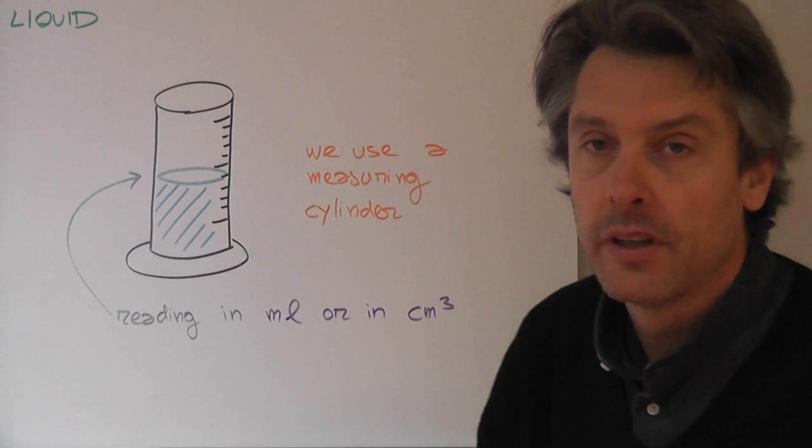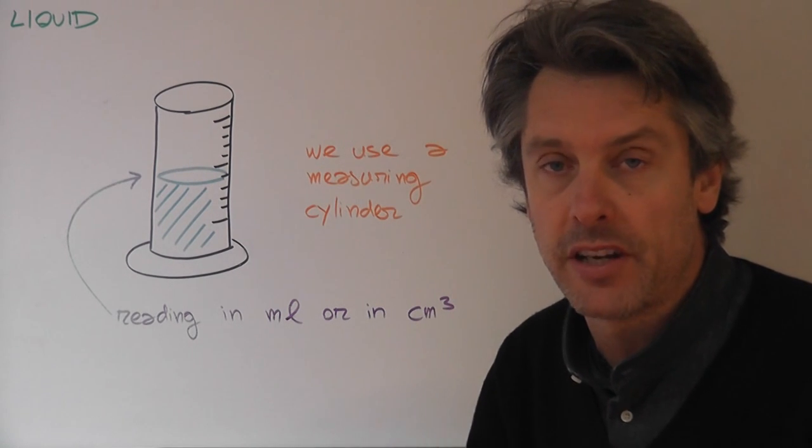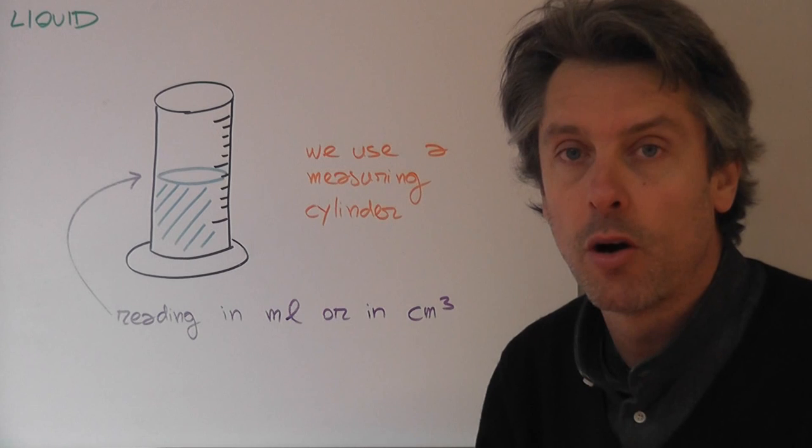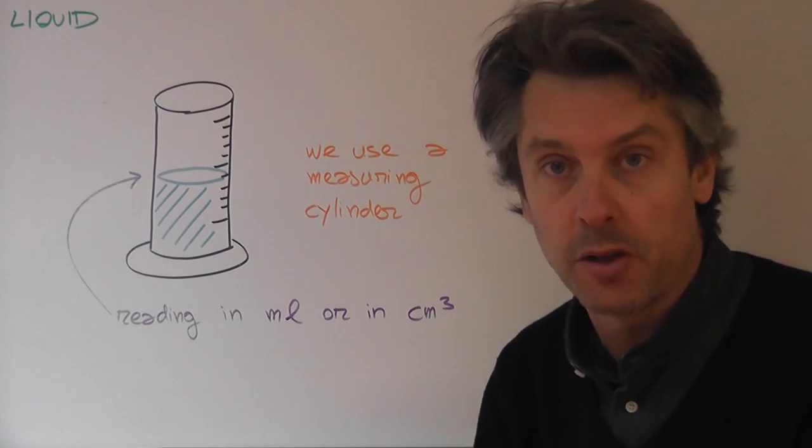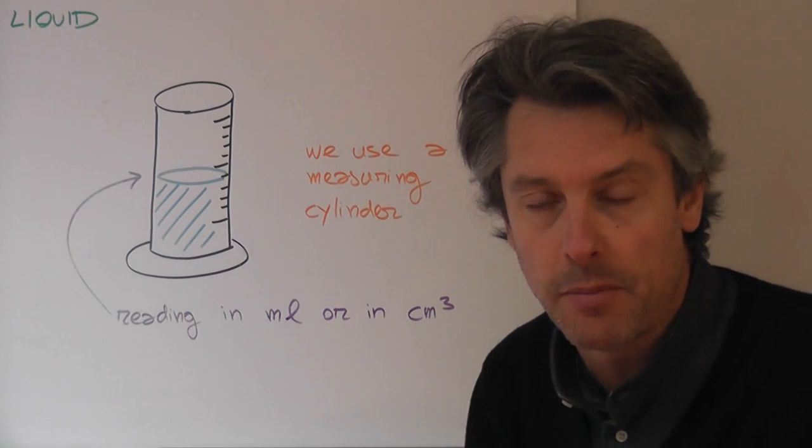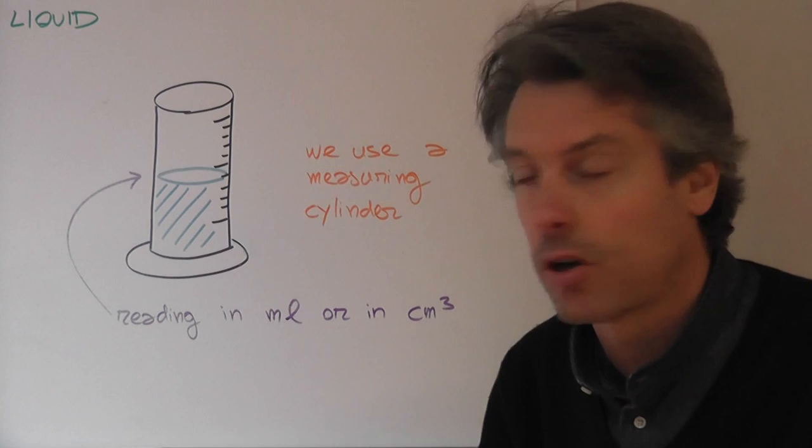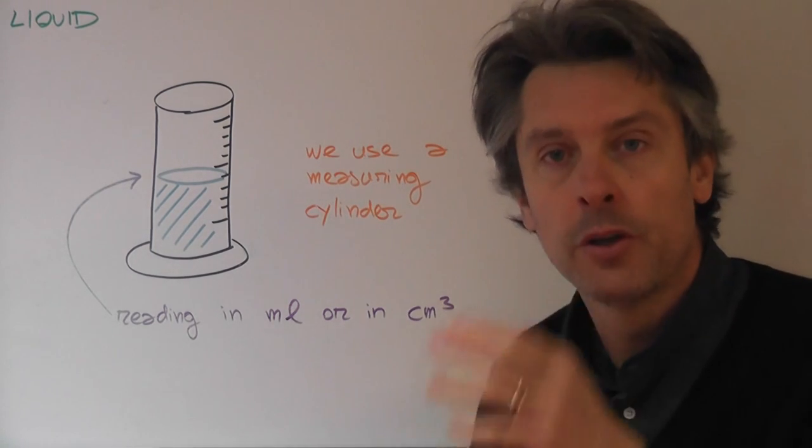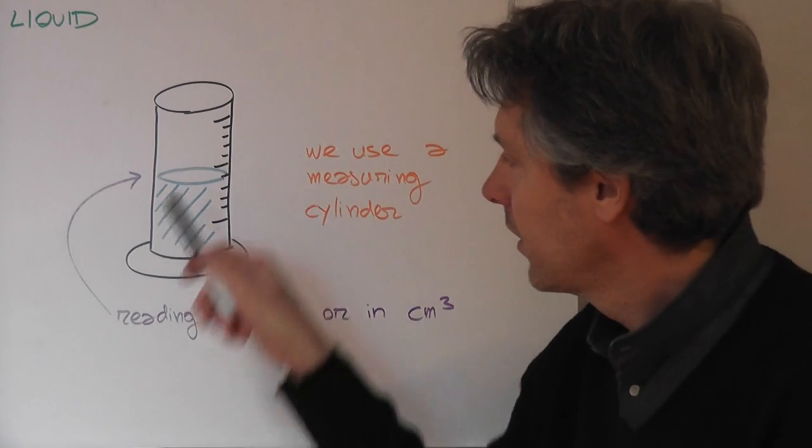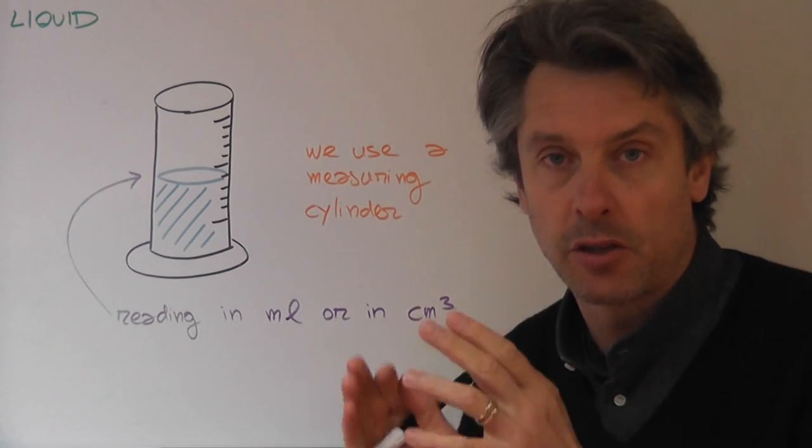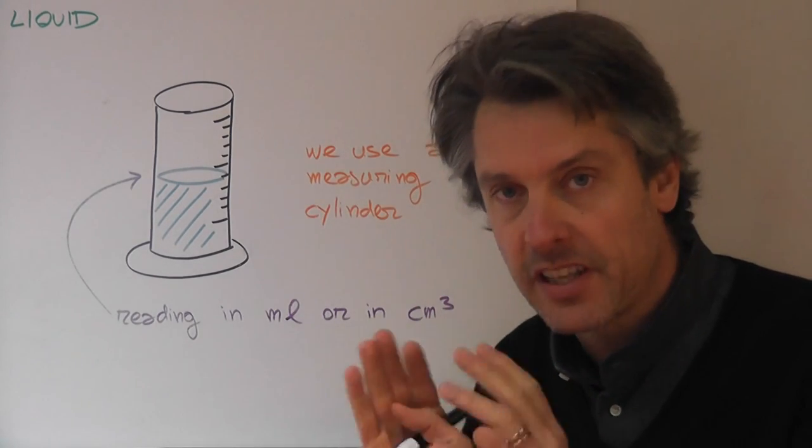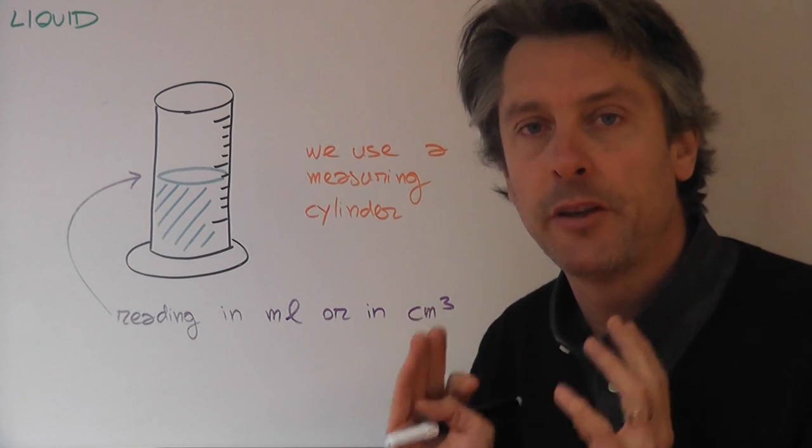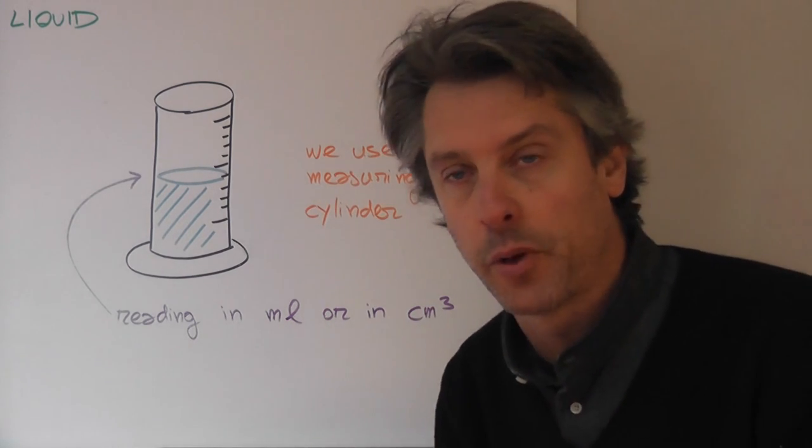And it has a scale. This scale is usually given in units of volume, like the cubic centimeter, or an equivalent unit, which has exactly the same value, which is called the milliliter. And what do you do? You pour your liquid and you get the reading. So it's very immediate. So in this case, you really measure directly the volume. And you can use this for basically any liquid.